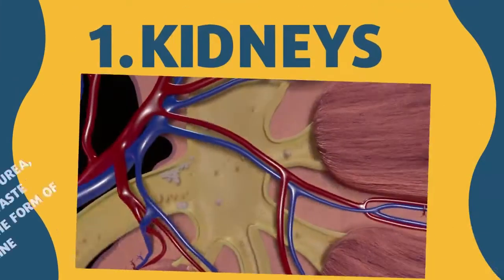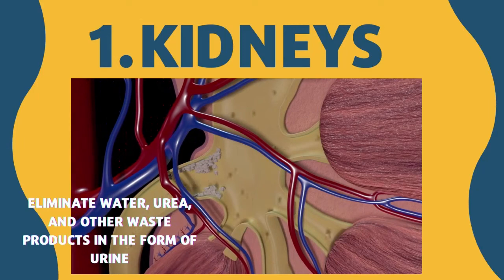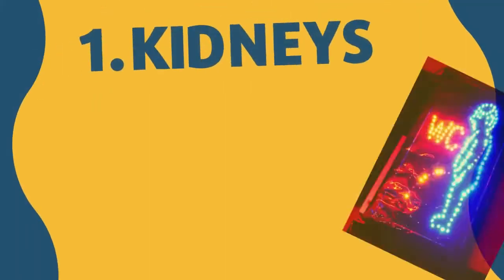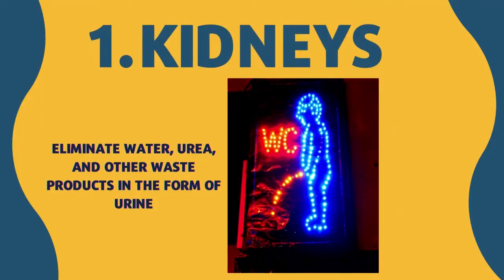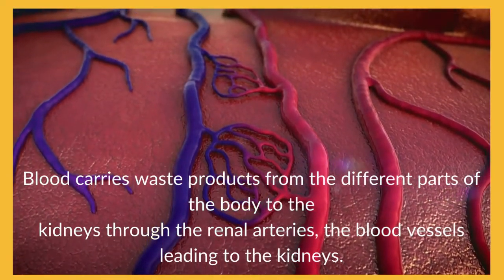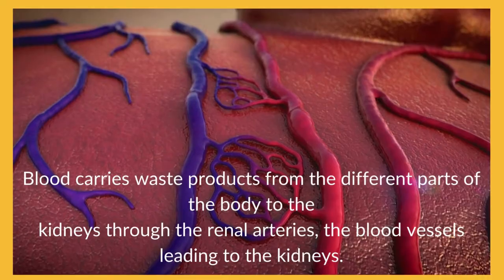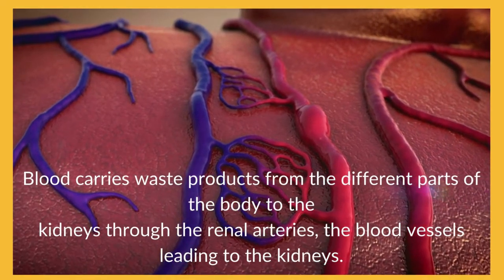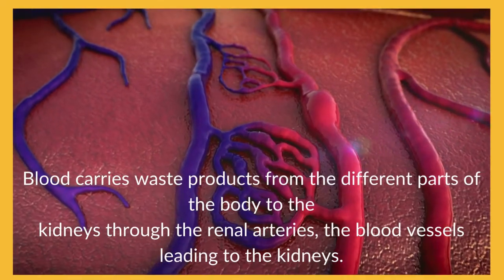The first is the kidney, which is 10 cm long and 5 cm wide each. It eliminates water, urea, and other waste products in the form of urine. Urine is a liquid waste that passes from our body. The blood carries waste from different parts of the body to the kidneys through the renal arteries, the blood vessels leading to the kidneys.